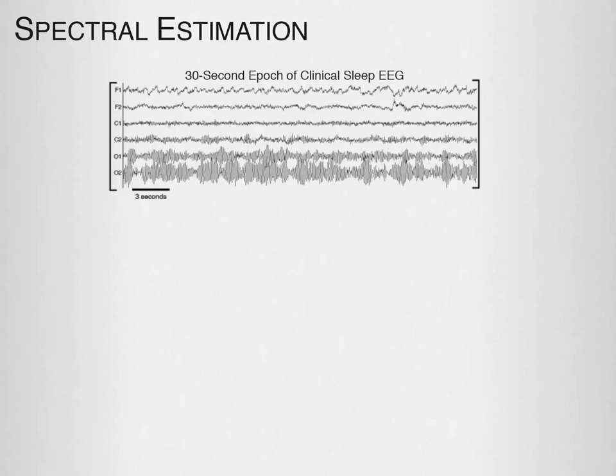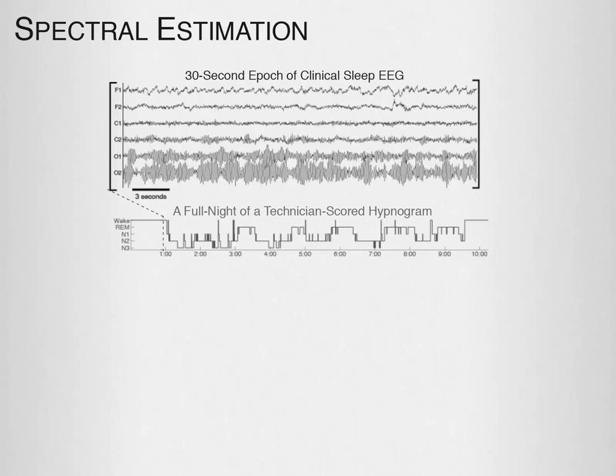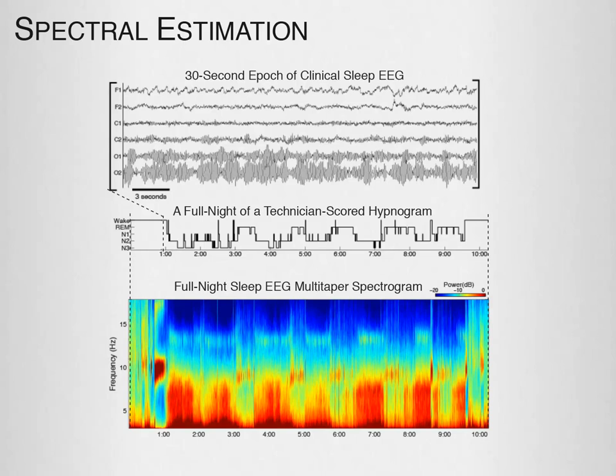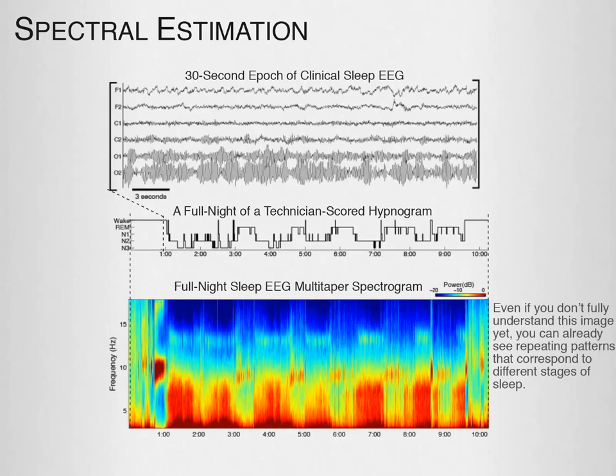Ultimately, what we will show in these modules is how we can take the sleep EEG and, rather than representing it as a hypnogram, represent it by the spectrogram — which is completely based on objective data and contains much more information than the hypnogram. Even if you don't fully understand this image yet, you can already see repeating patterns that correspond to different stages of sleep.